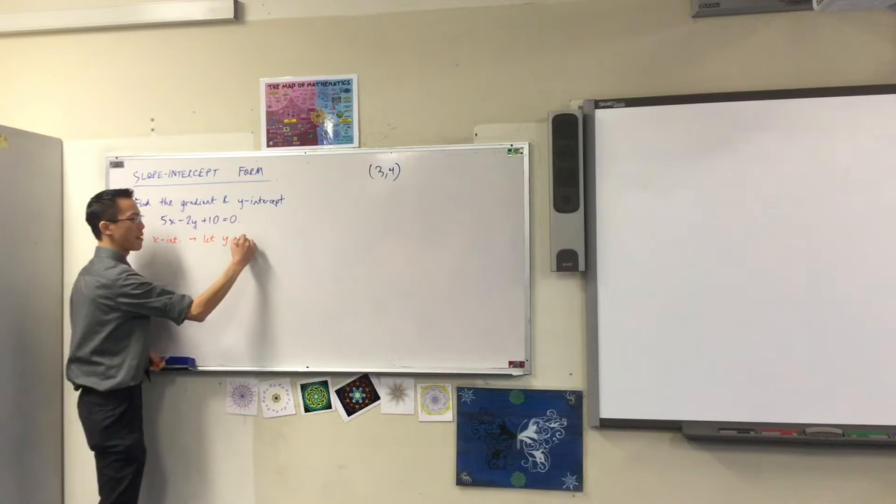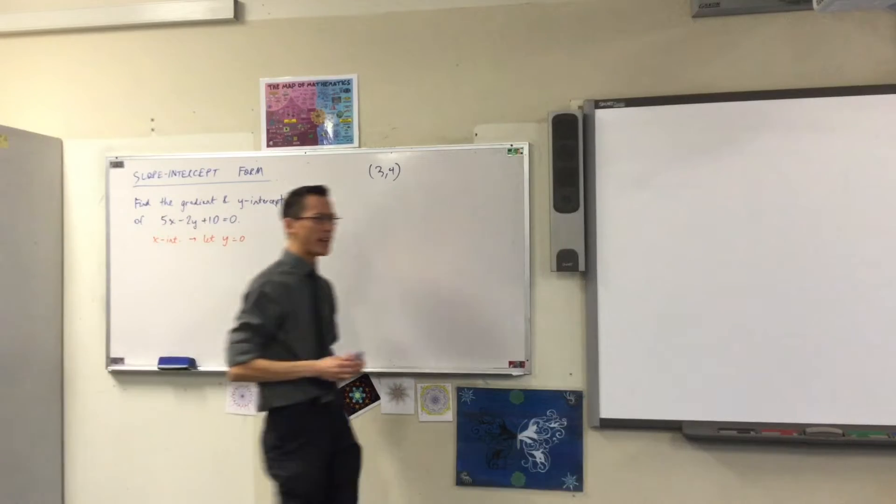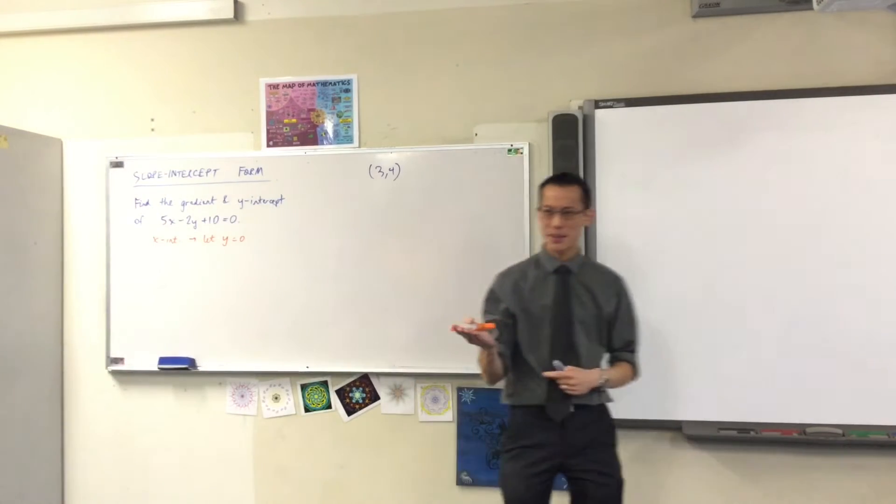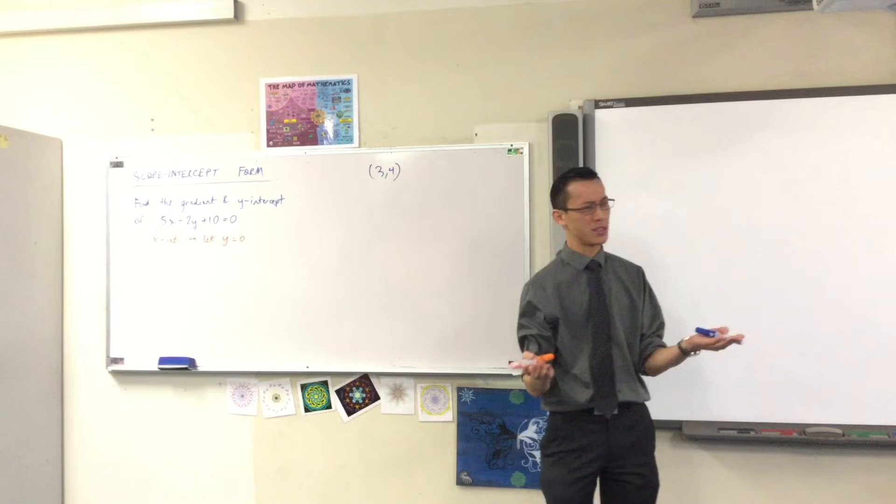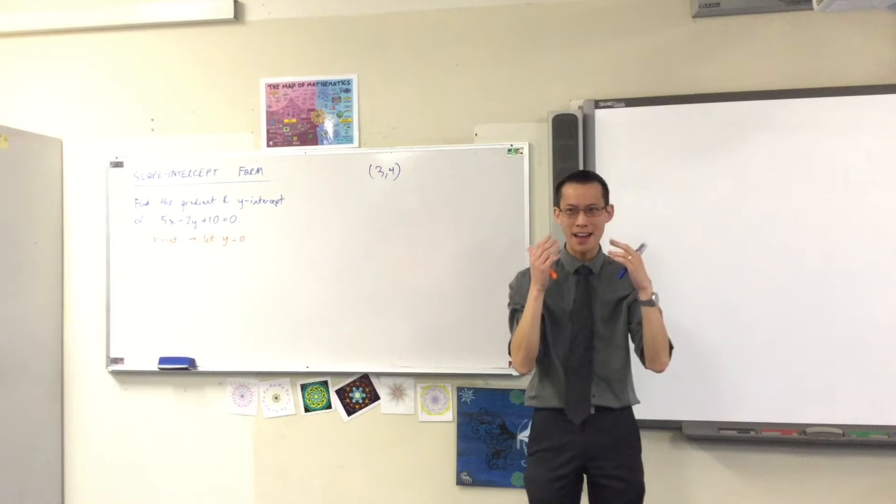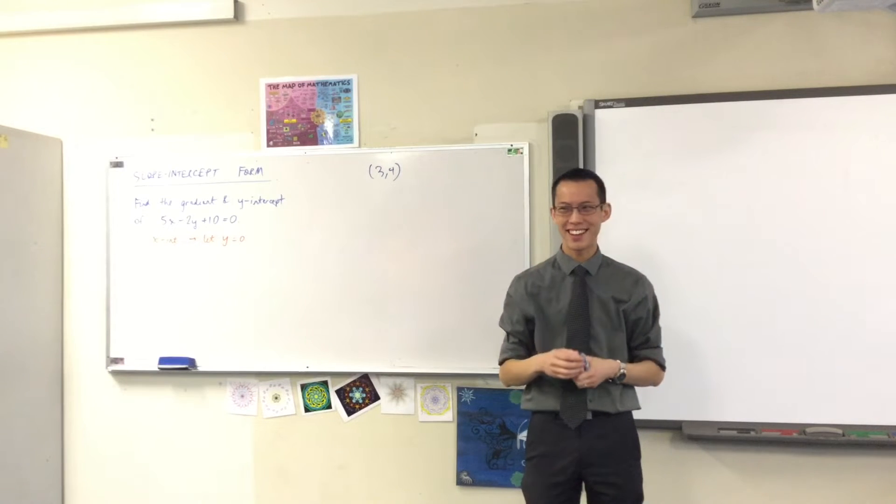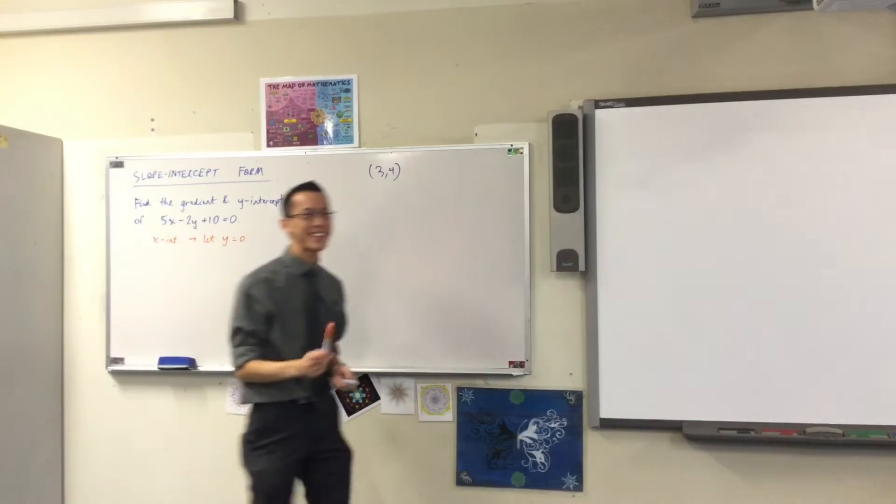You might remember, I pointed this out, it's a bit weird, you want to find the x-intercepts, so you let y equals zero. Can someone remind me why that is? Why that is? Someone else, someone hasn't said anything yet.